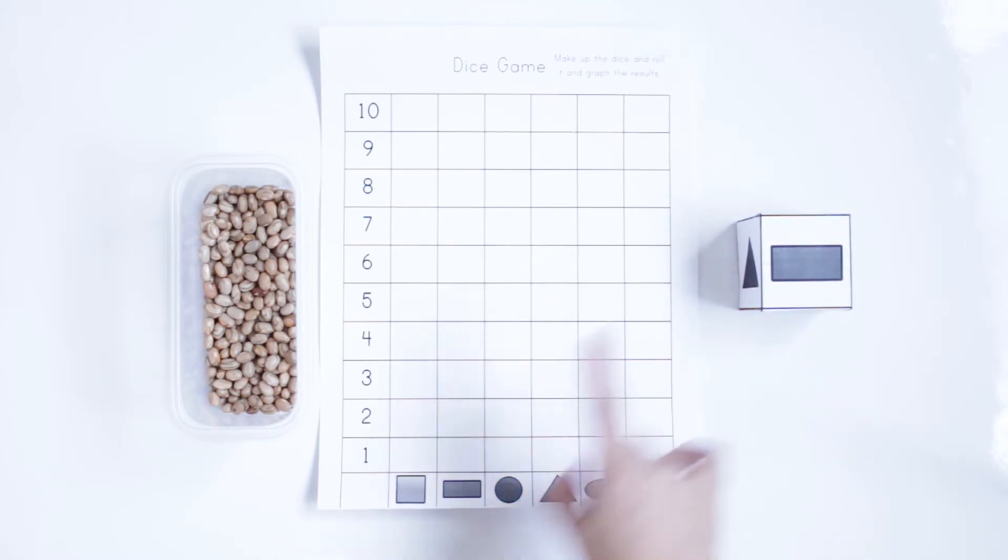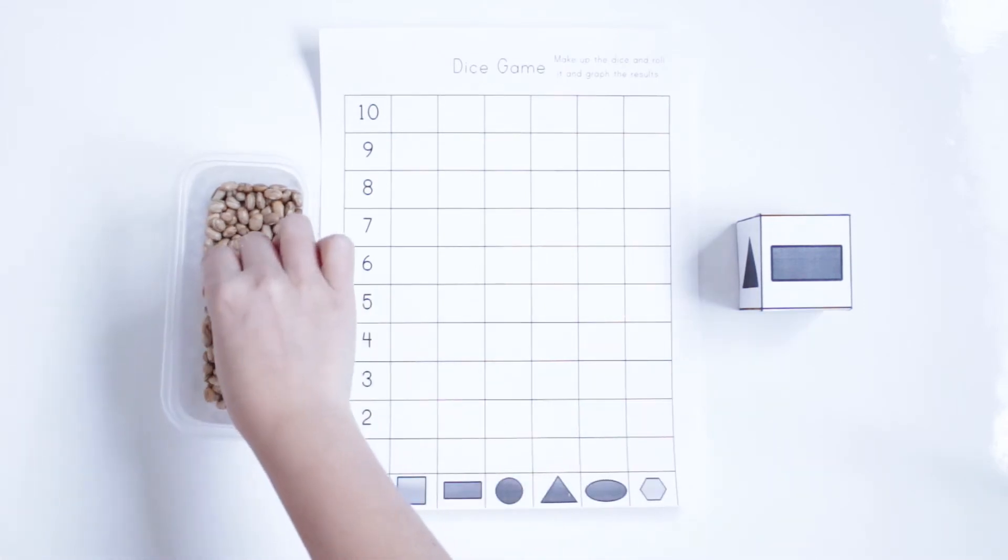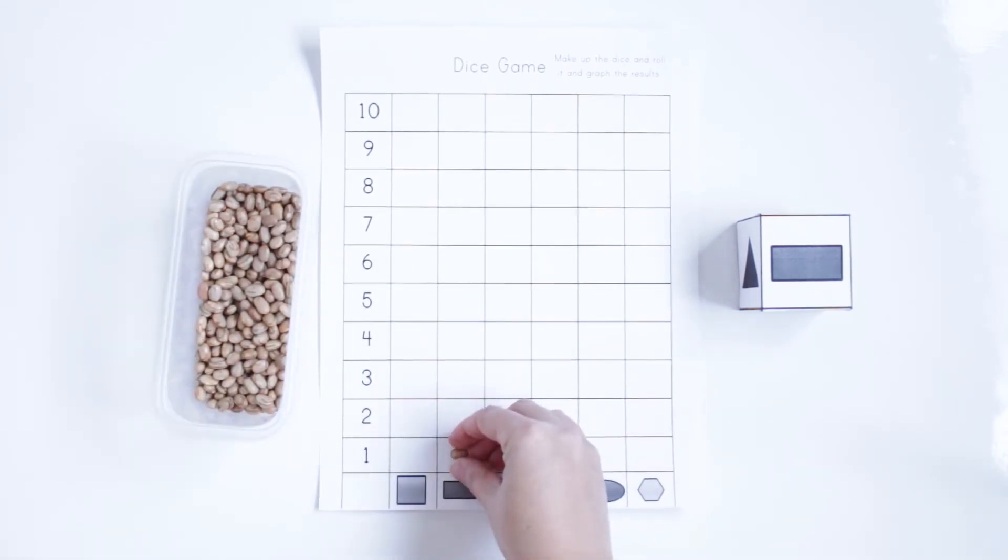So this is a rectangle, and where is the rectangle? Here. So the rectangle, it shows one time, so I'm going to put one bean here.